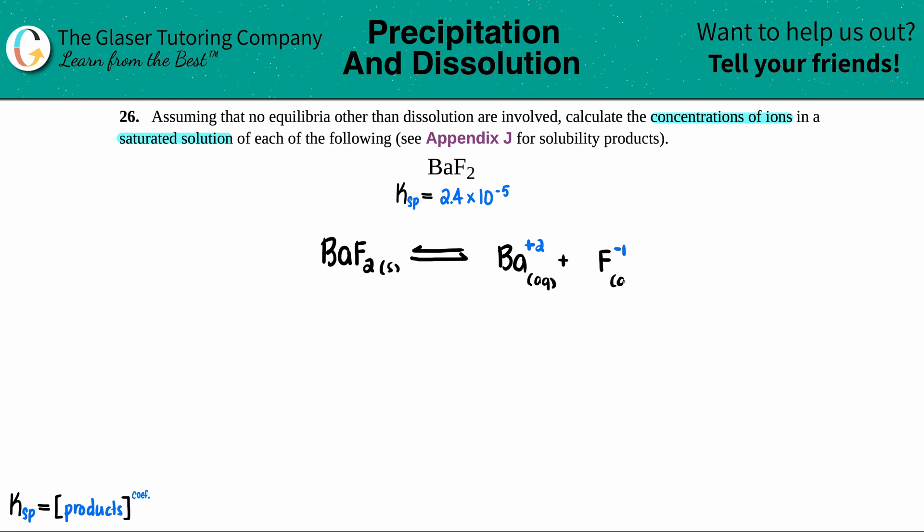So they go in the Ksp expression. And I just have to balance this. There's two fluorines, so I just have to put a two in front of here.